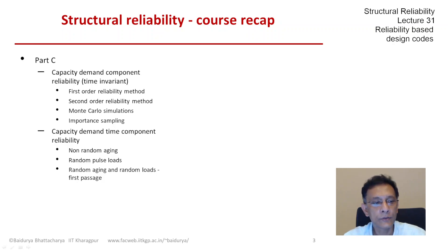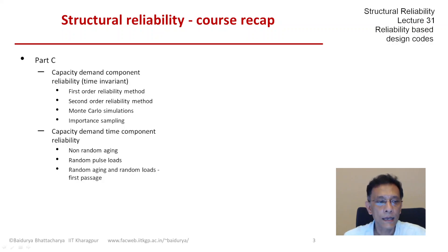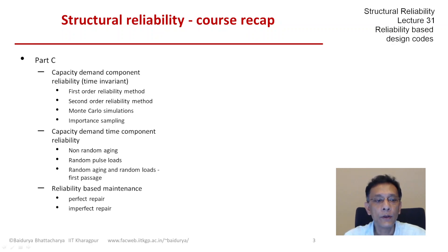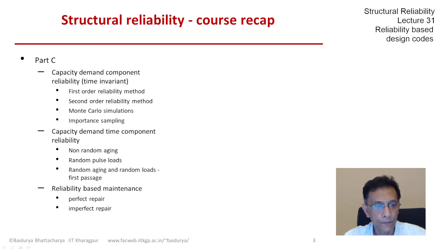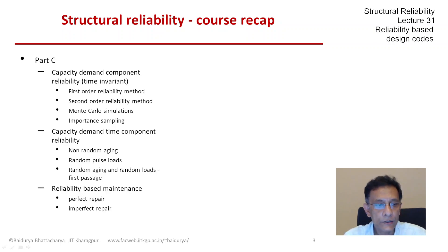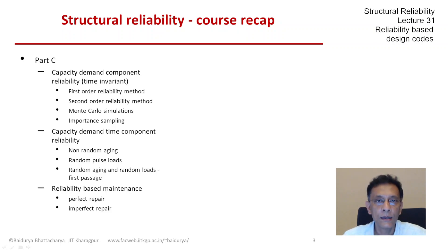Then we brought in randomness, first in the form of pulse loads with random magnitudes. Then we considered the pulses to appear as a Poisson process with random magnitudes, and then we looked at the first passage problem in which both the load process and the strength process were random but stationary in nature. We then ended that time-dependent reliability formulation with reliability-based maintenance of a component, looking at the effect of perfect repair and imperfect repair and how those affect the hazard function and the reliability function.